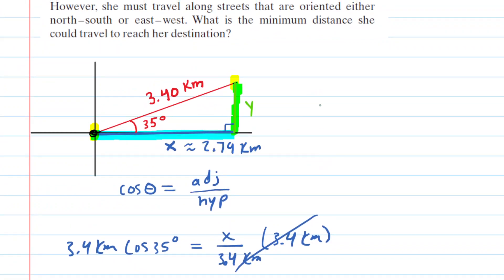And now we wish to find the y component. We know that the sine of an angle is equal to the side that is opposite of the angle divided by the hypotenuse. So in this case, the sine of 35 degrees would equal the side opposite of 35 degrees, which is y, divided by the hypotenuse of 3.4 kilometers.